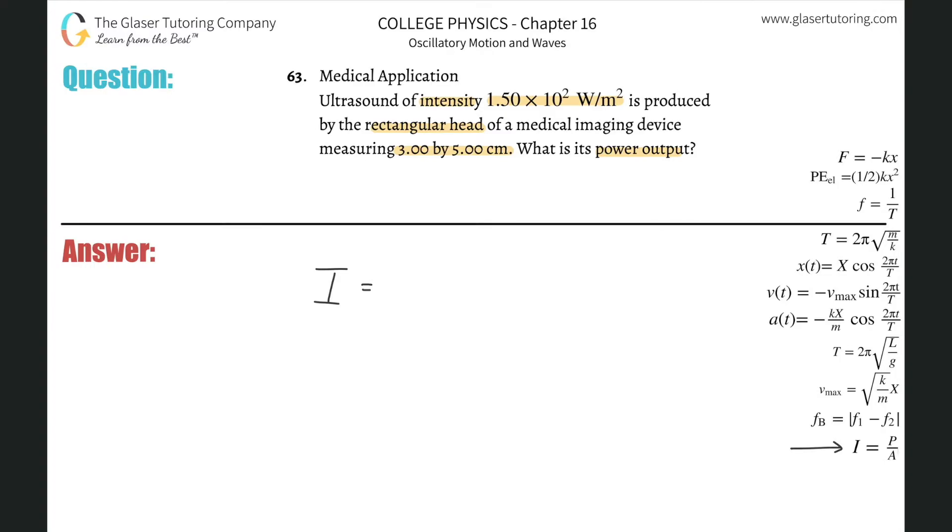equal to the power divided by the area over which that intensity is being applied. So to figure out the power, just cross-multiply: that is the intensity multiplied by the area.